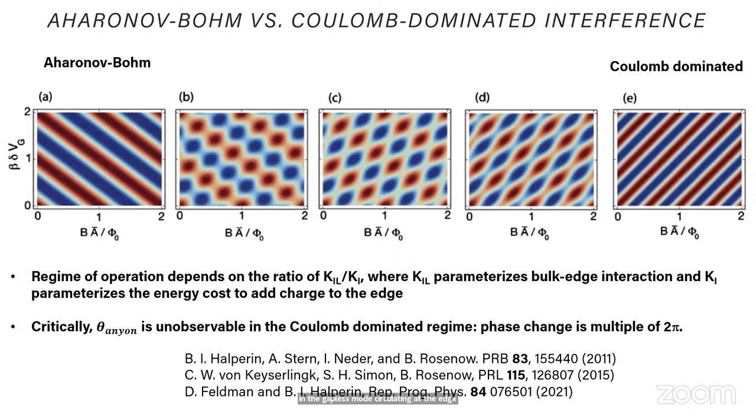So I want you to keep in mind that the regime of operation depends on some coupling parameters, which I'm going to call K_IL, which parametrizes the coupling between a localized charge in the interior of the quantum Hall liquid with the charge on the edge, in the gapless mode circulating at the edge, and K_I, which basically, if you want to think of it macroscopically, sort of the edge stiffness. How much energy does it cost to add charge to that edge or move the edge? So if I'm building up an electrostatic model, these are the coupling constants that make all the difference to the observed behavior.